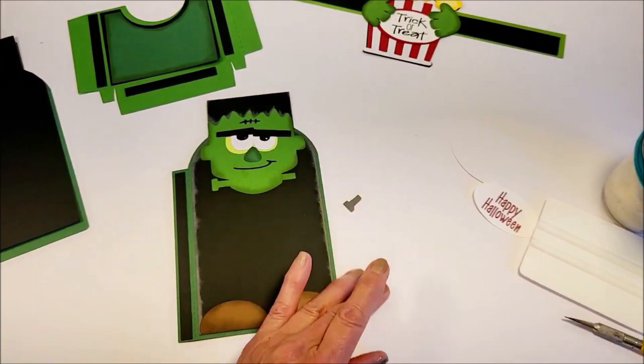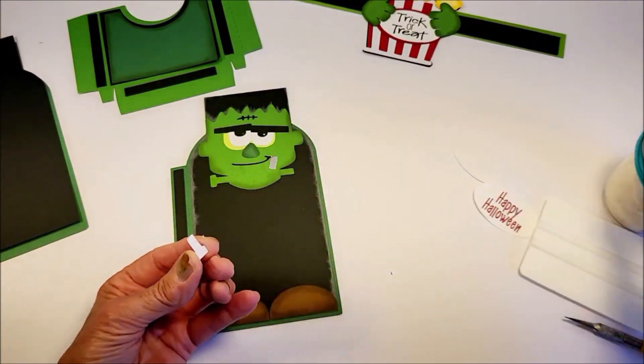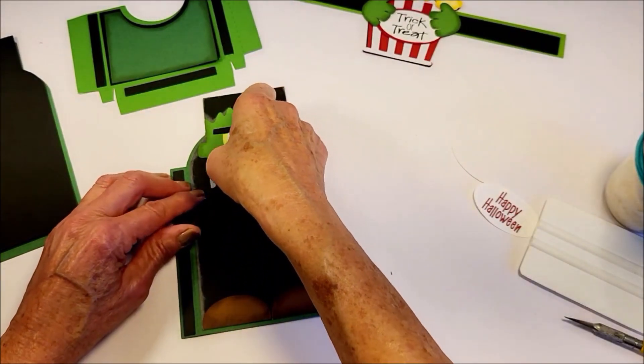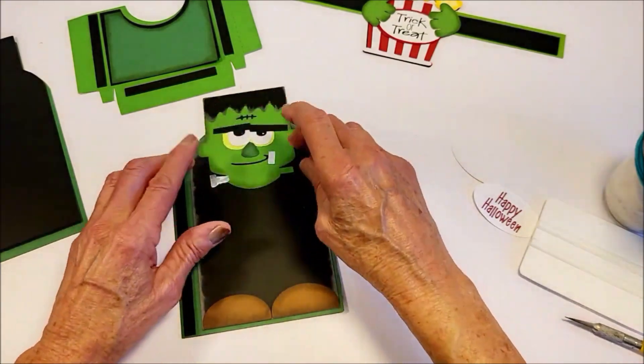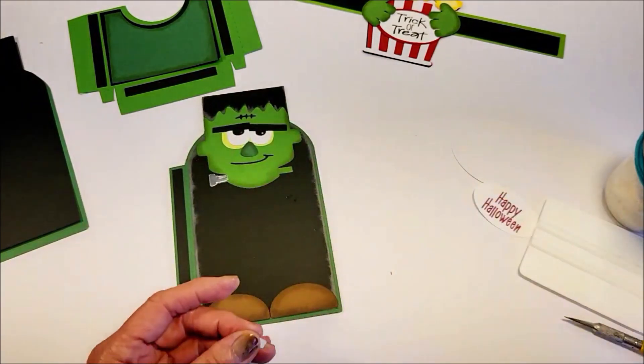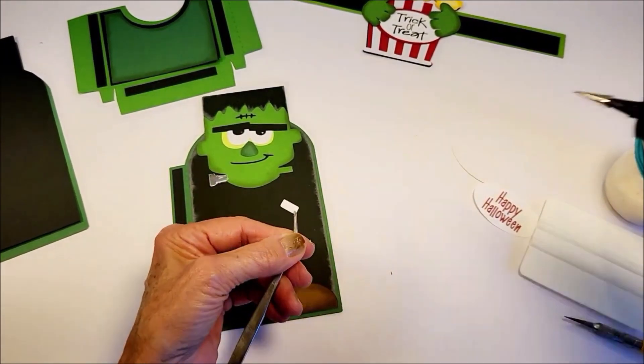And then we have two little pieces for the bolt in his neck and I cut that out of chrome silver. It helps to use tweezers on these little pieces.